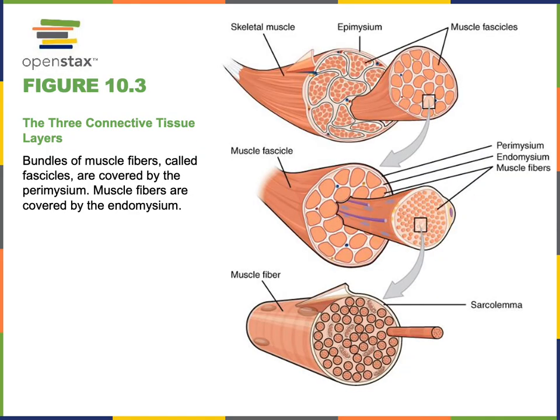Surrounding a skeletal muscle organ is a layer of connective tissue known as epimyseum, which is continuous with the tendons of skeletal muscles. The bundles of muscle fibers known as muscle fascicles found within a skeletal muscle organ are each wrapped with a layer of connective tissue known as perimyseum. Inside of a muscle fascicle there is loose areolar connective tissue surrounding the muscle fibers, known as endomyseum.